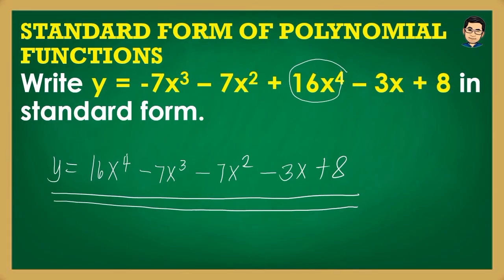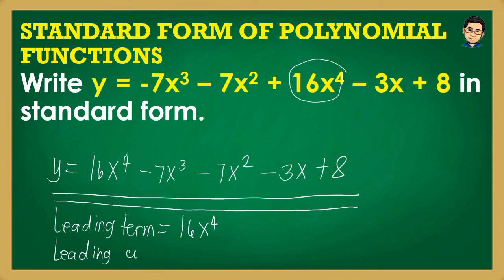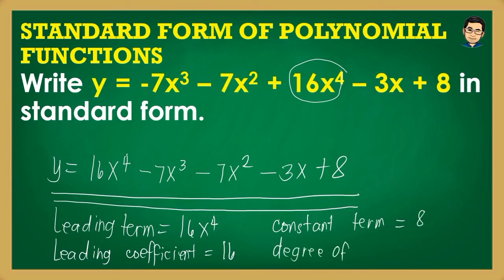From this standard form, we can identify: the leading term is 16x⁴; the leading coefficient is 16 (the numerical coefficient of the leading term); the constant term is 8 (the term without a variable, written last); and the degree of the polynomial function is 4, since that is the highest power. So this is not a cubic function — it is a quartic polynomial function.